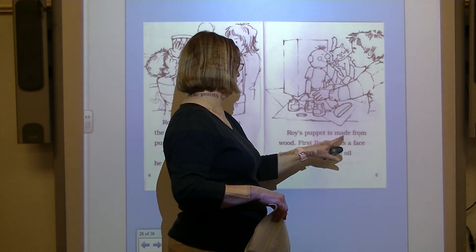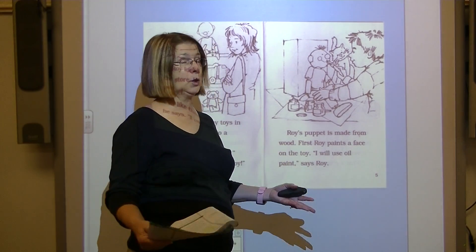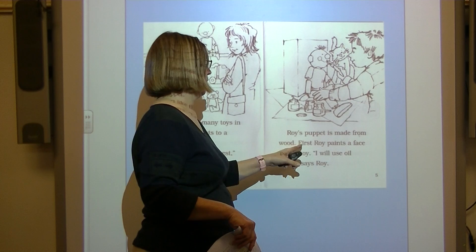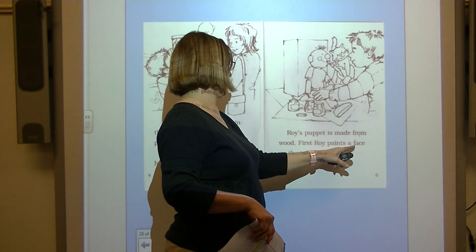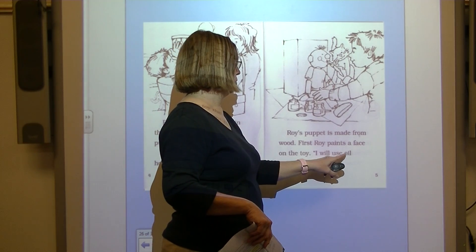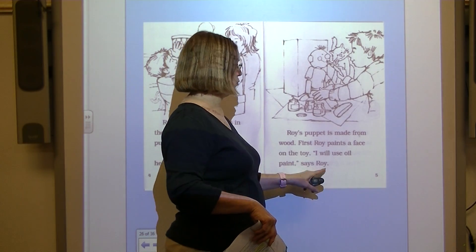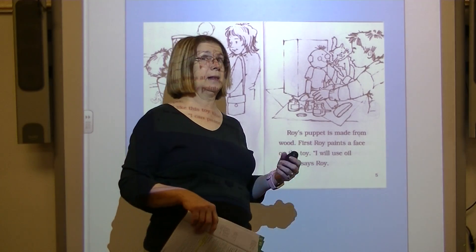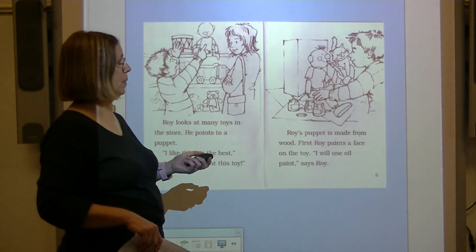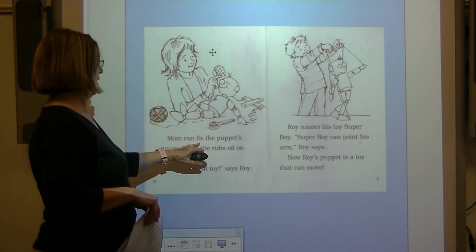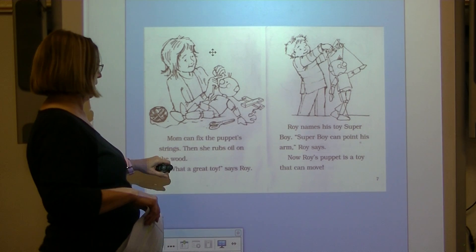Roy's puppet is made from wood. See, that confirmed my prediction that this must be wood. First, Roy paints a face on the toy. I will use oil paint, says Roy. See, there's more than one kind of paint. There's water paint and there's oil paint.